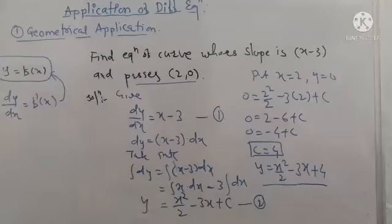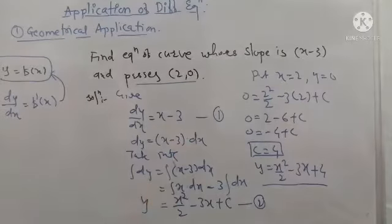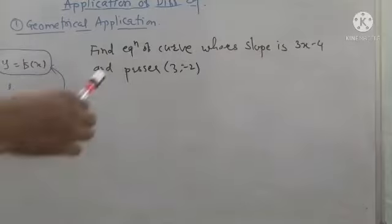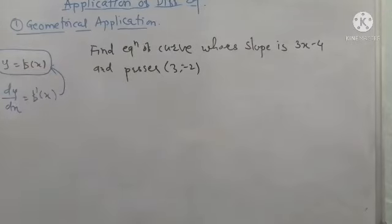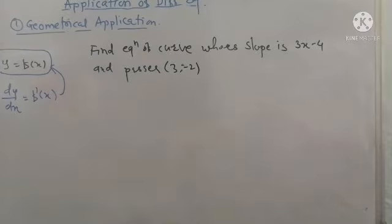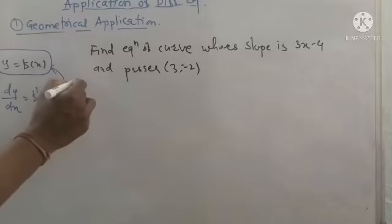Substituting C = 4, equation 2 becomes y = x squared by 2 minus 3x plus 4. This is the required curve, which has slope x minus 3 and passes through the given point.